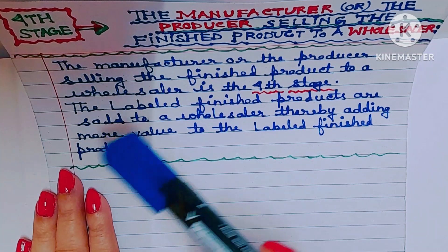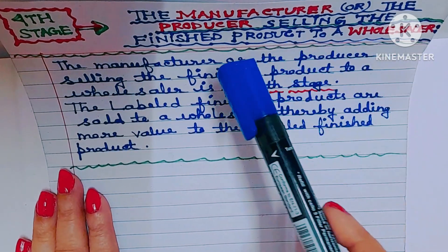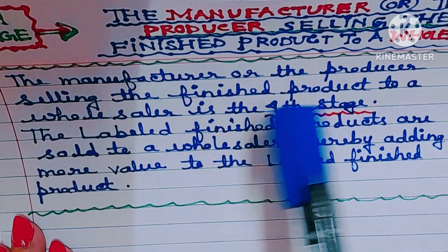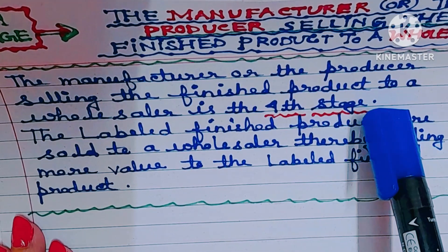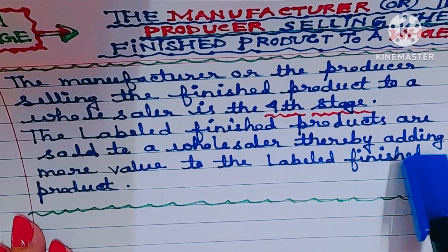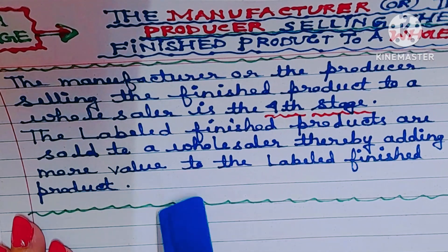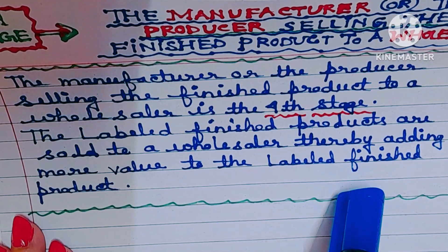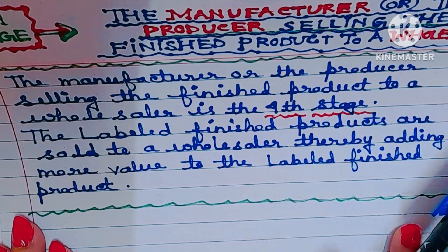Fourth stage: the manufacturer or the producer selling the finished product to a wholesaler. The labeled finished products are sold to a wholesaler, thereby adding more value to the labeled finished product. At each of these stages, there is some value addition to the product, and that is the reason GST is a multi-stage tax.